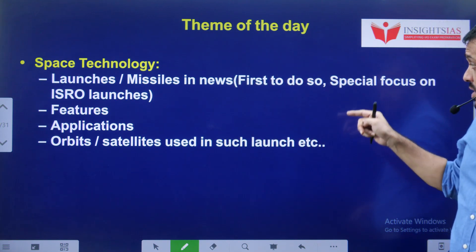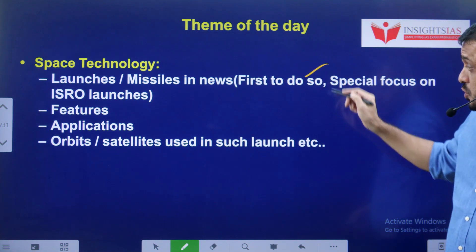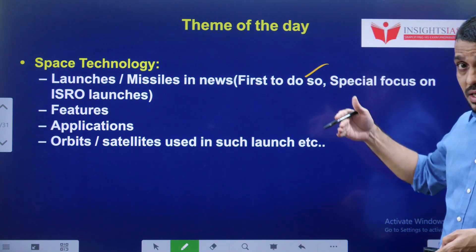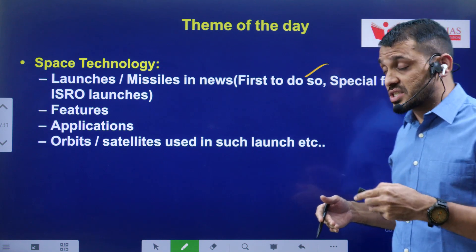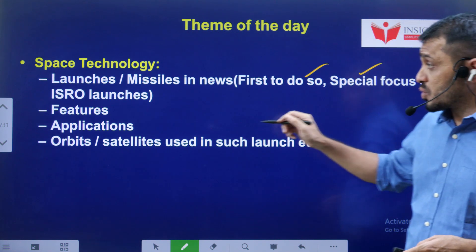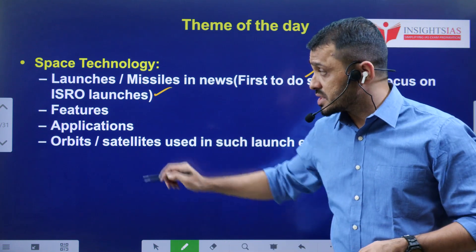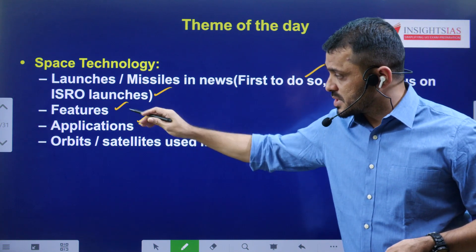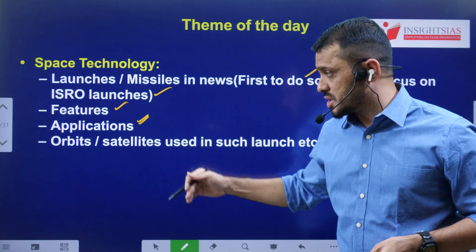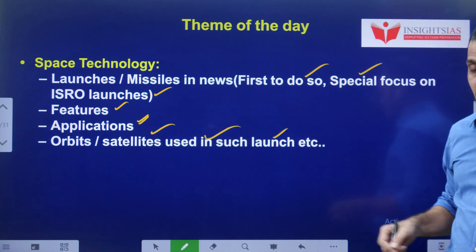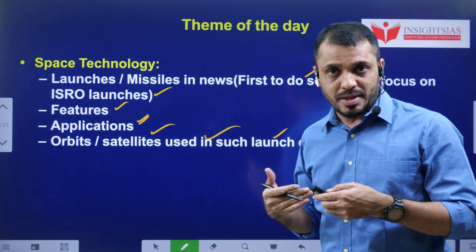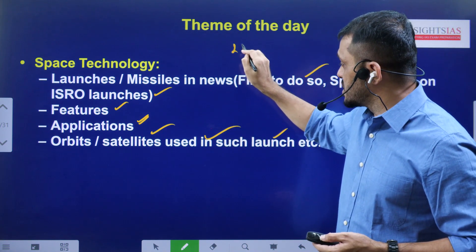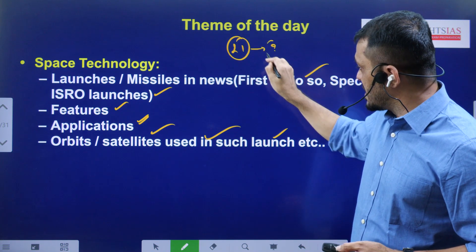Focus on missiles and firsts in news - for example, Chandrayaan-3 landed for the first time, those kinds of things. Special focus on ISRO launches: Gaganyaan, Chandrayaan, and all these things - features of those particular missions, what are the applications, what is the significance of that particular mission. Then orbits and satellites used in such launches, and which orbit it is going to be launched. For example, the Aditya mission is going to be launched at the L1 point. Tell me, what does L1 mean?